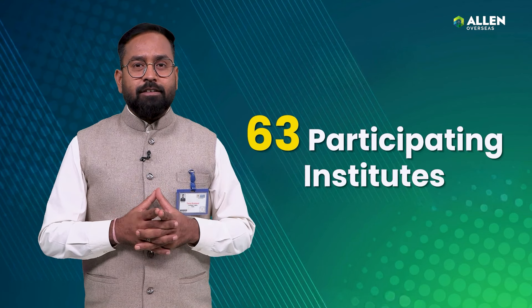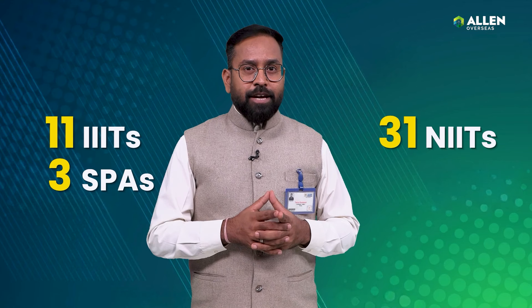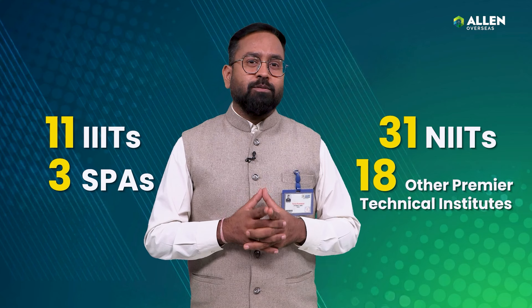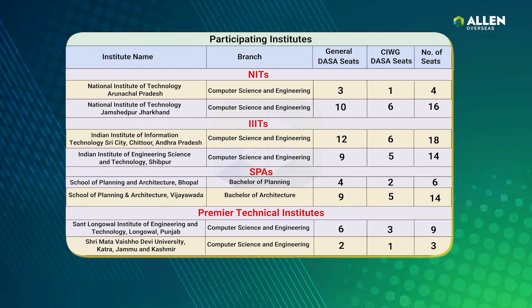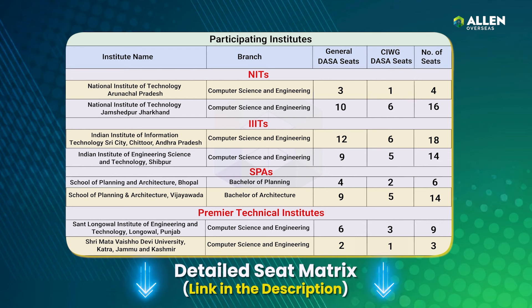There are 63 participating institutes under DASA, including 31 NITs, 11 IIITs, 3 SPAs, and 18 other premier technical institutes. These institutions provide excellent opportunities for higher education. As you can see on the screen, here are a few of the participating institutes. Taking NIT Arunachal Pradesh as an example: for Computer Science and Engineering, there are three seats for DASA and one seat for CIWG. You can find the detailed document with the complete seat matrix for 2023 and all participating institutes in the description below.